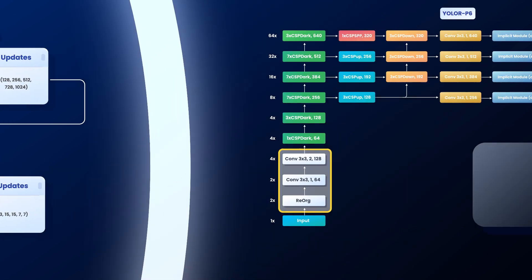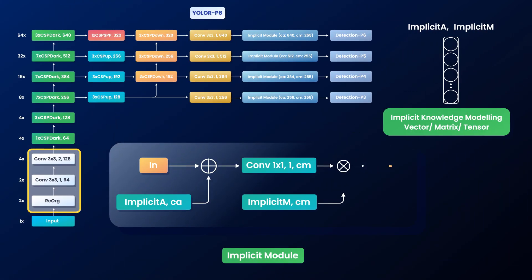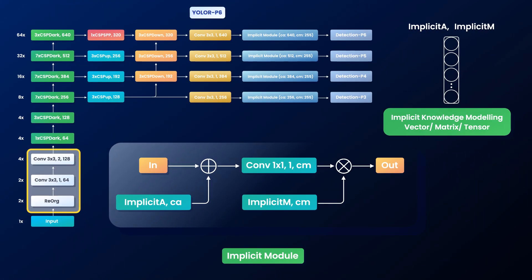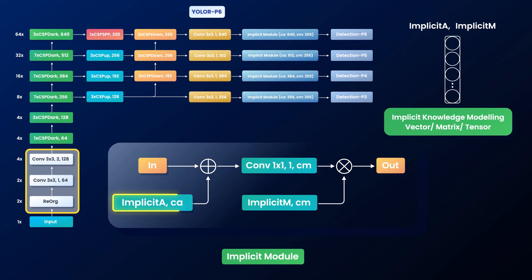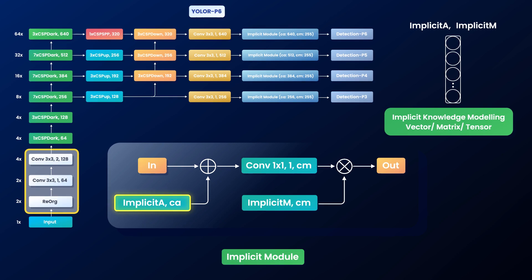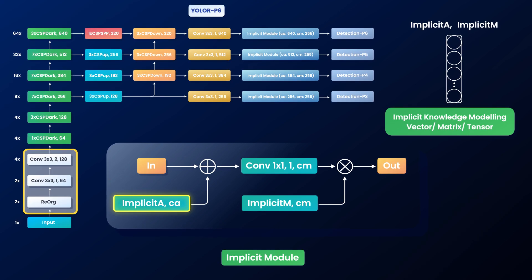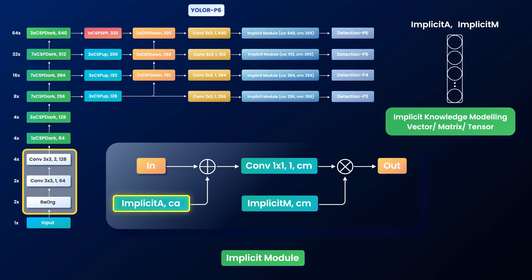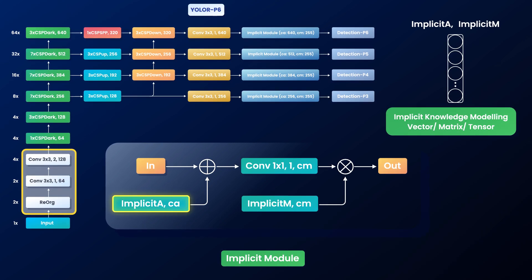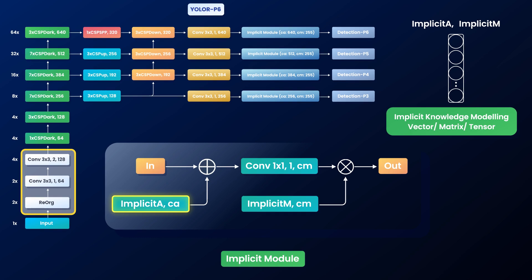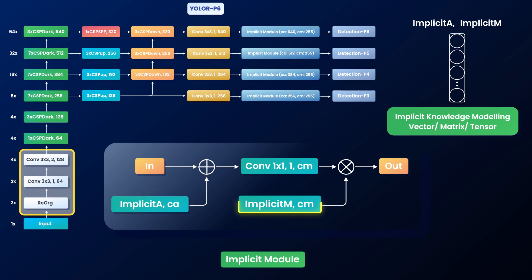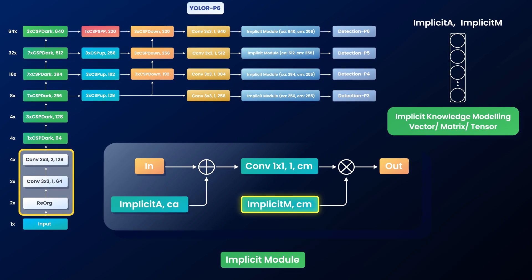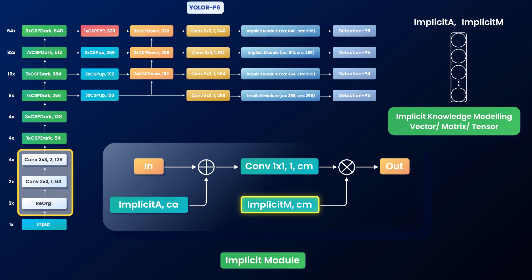The implicit knowledge is modeled using trainable vectors. The first module helps with the kernel space misalignment problem and is combined with explicit knowledge using the addition operator. The second module is for prediction refinement and is combined using the multiplication operator.